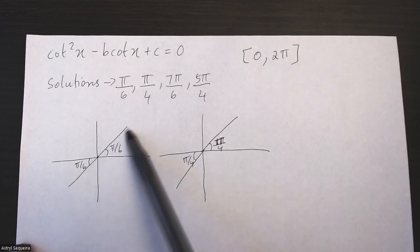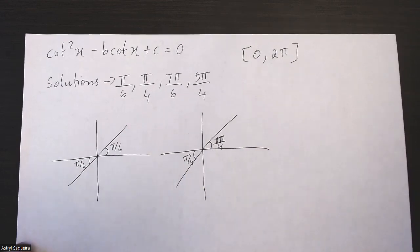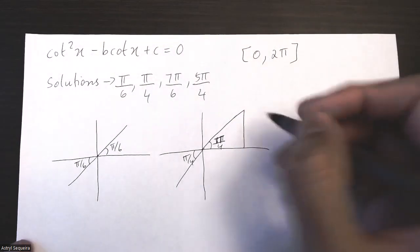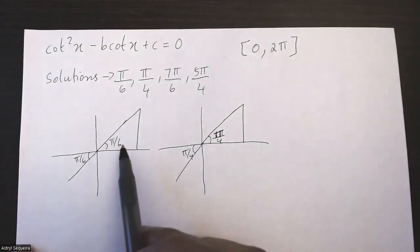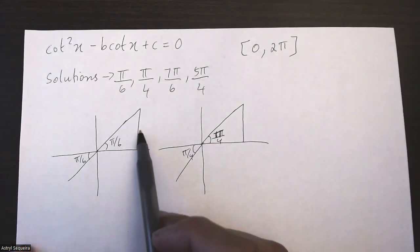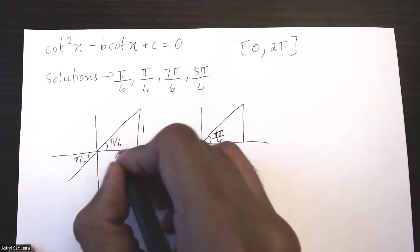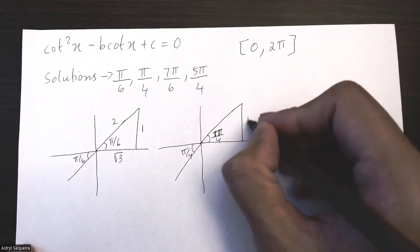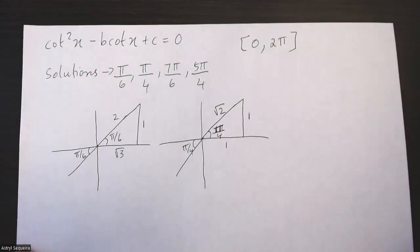I know that cot is positive in these two quadrants for both of them, so I'm going to have positive solutions. I'm going to draw my triangle just in the first quadrant. For π/6, opposite is 1, adjacent is √3, and hypotenuse is 2. For π/4, opposite is 1, adjacent is 1, and hypotenuse is √2.